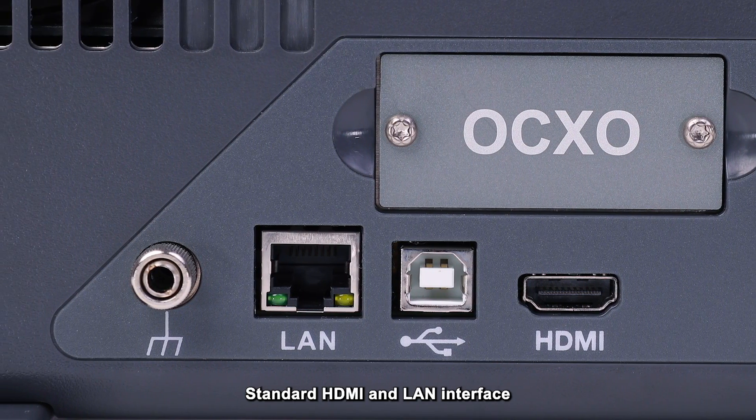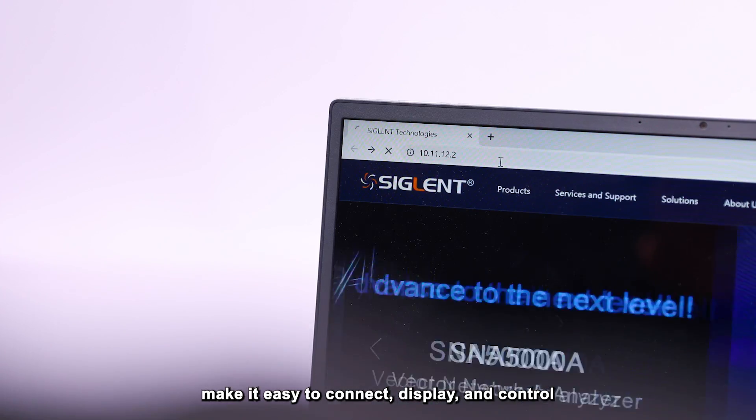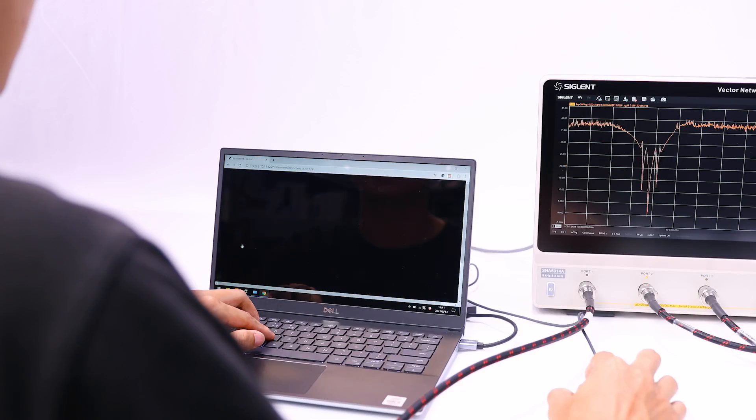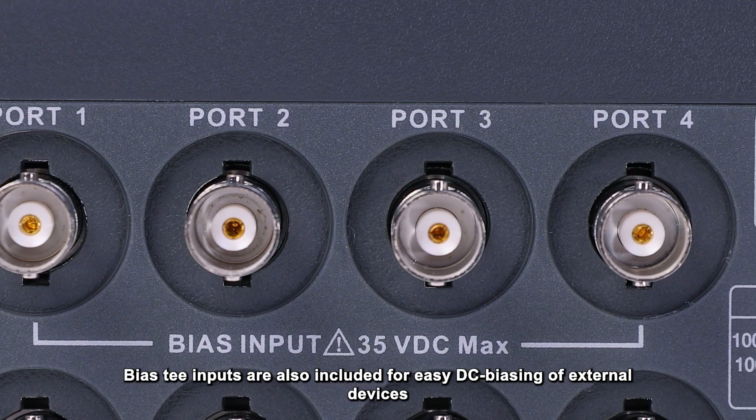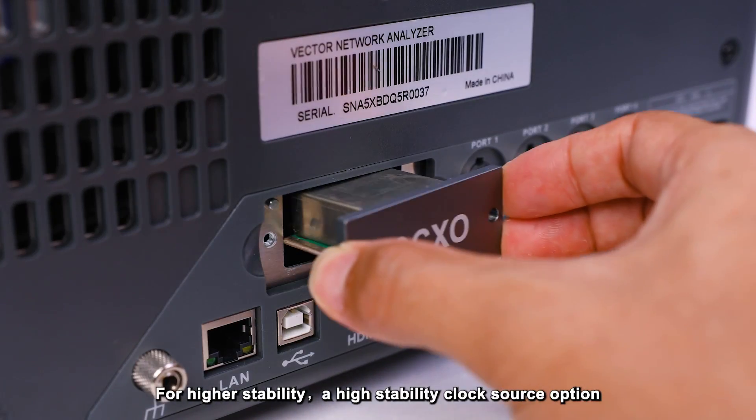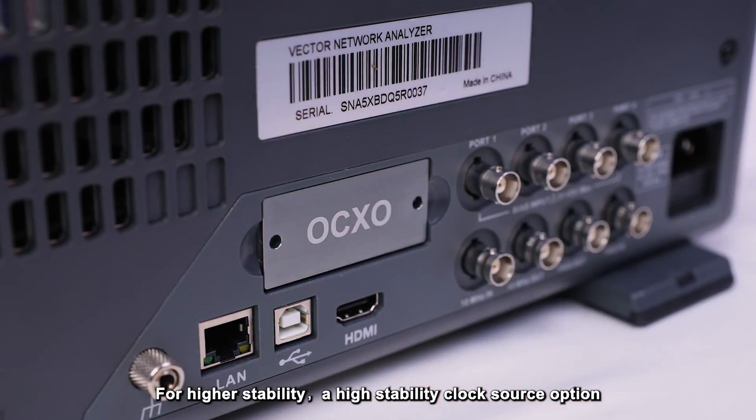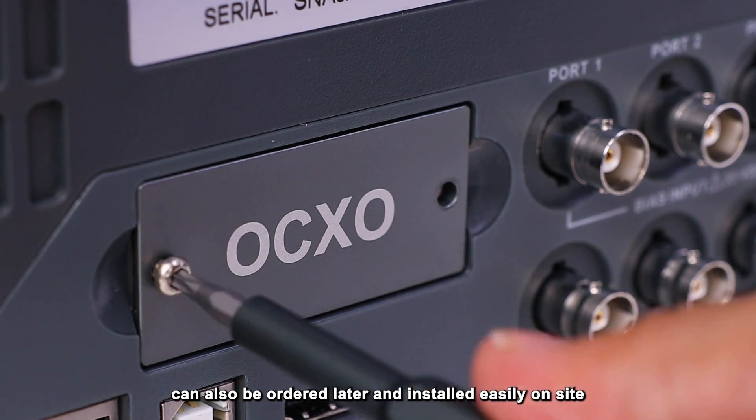Standard HDMI and LAN interface make it easy to connect, display, and control. Bias T inputs are also included for easy DC biasing of external devices. For higher stability, a high stability clock source option can be ordered later and installed easily on site.